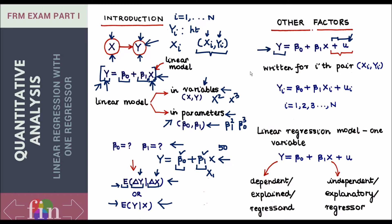When you write down this model, in econometrics textbooks you will often see it written with a subscript i, stating that this model is written for every student in the population — written for the i-th pair (x-sub-i, y-sub-i). If u-sub-i is the catch-all, it helps explain remaining variation. For example, two students whose fathers have the same height but who are themselves different heights — the only variable that can explain that difference is u-sub-i.